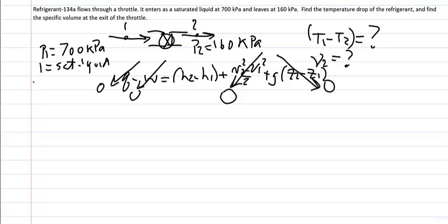So basically this just tells me that my first law equation for this single stream steady flow process is just H2 minus H1 equals zero, or H1 equals H2. So this is the version of the first law.